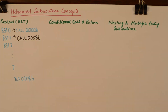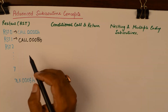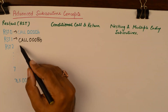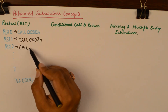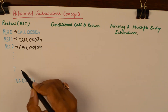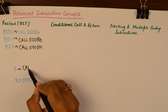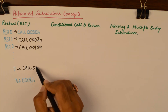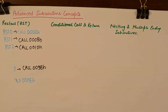Putting 1 here yields the address of RST 1. Similarly, RST 2 will be call 0010h, and so on. RST 7 will be call 0038h.